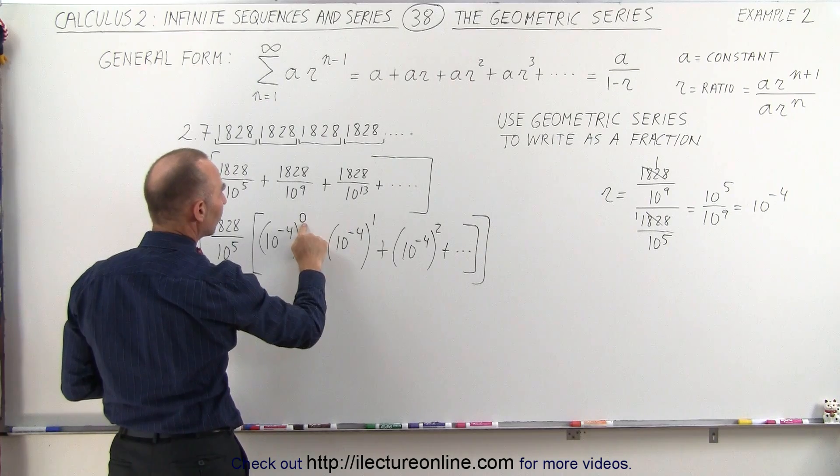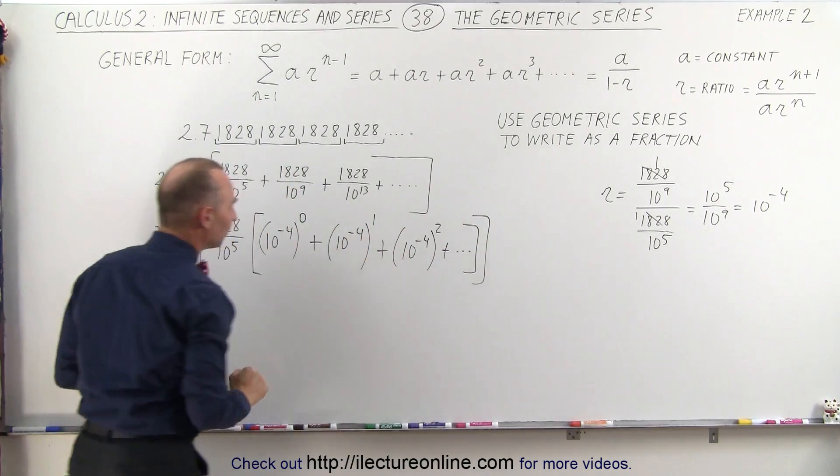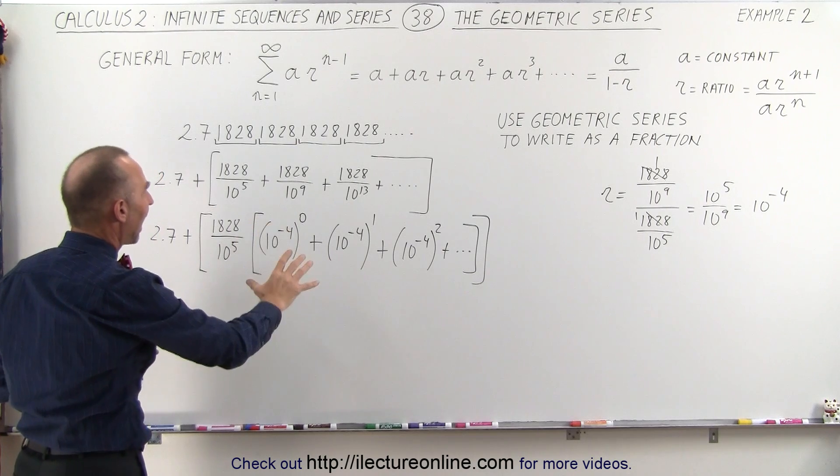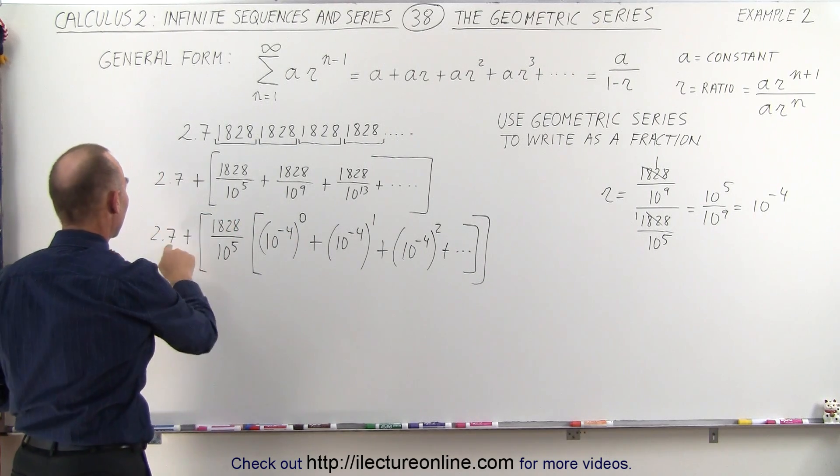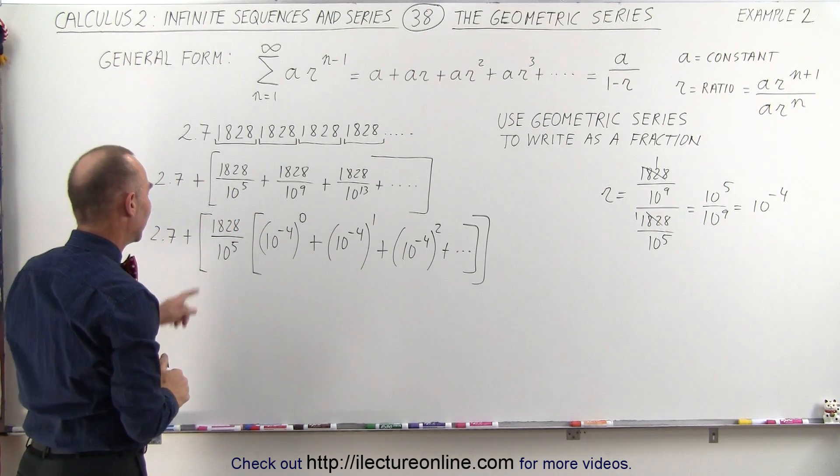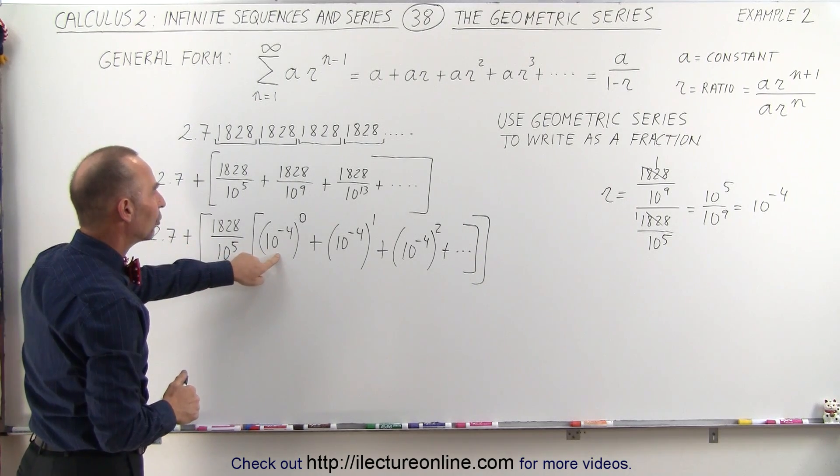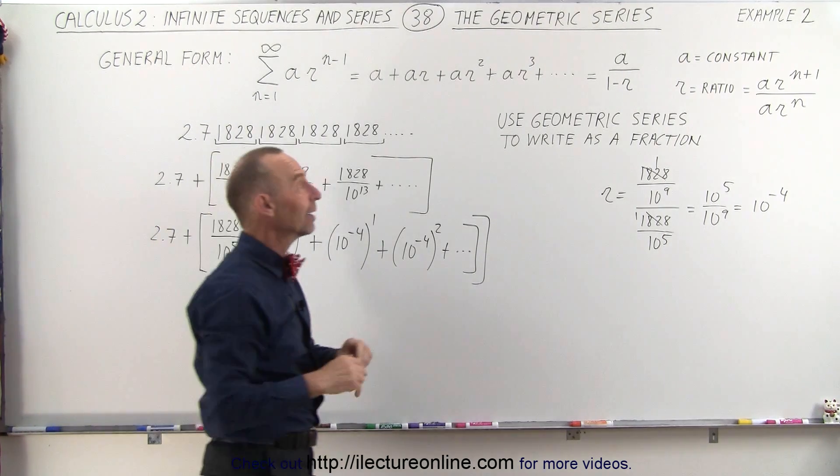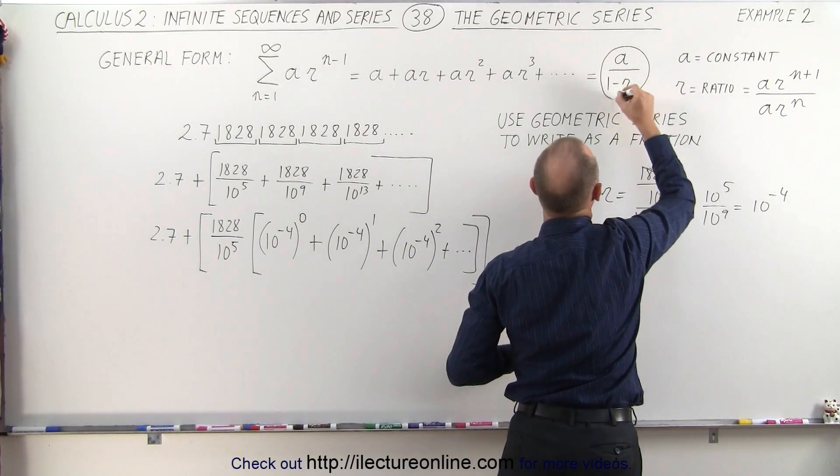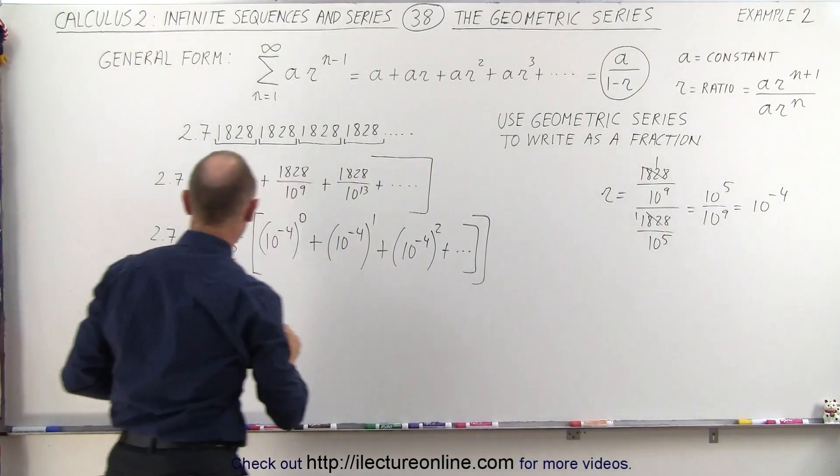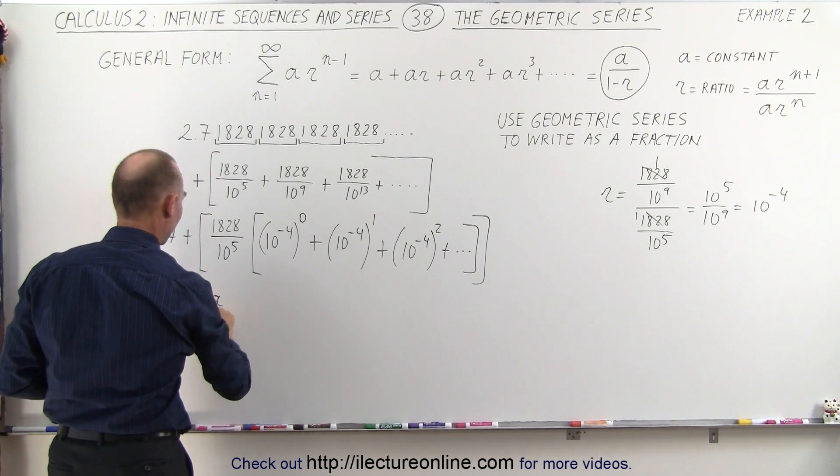So it looks like we now have represented this as the infinite sum and add to that 2.7. A is equal to this. We must add this at the end. And this is equal to R. So now we can find the sum using this concept right here. So the sum is equal to A divided by 1 minus R.